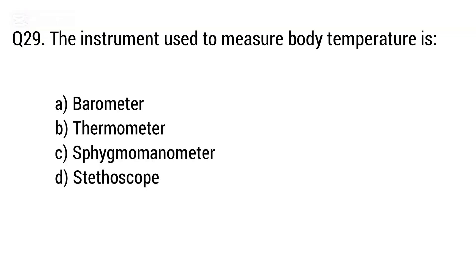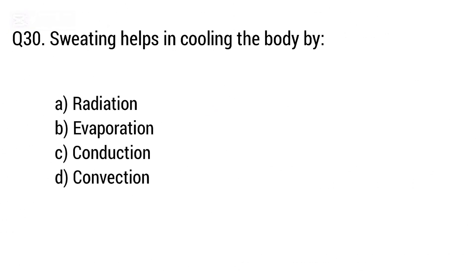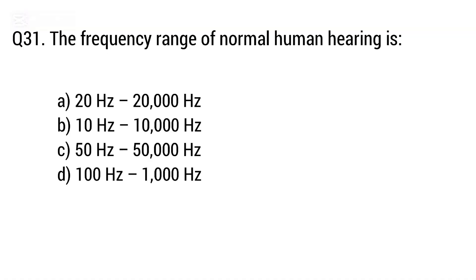Question 29: The instrument used to measure body temperature is? The right answer is option B — Thermometer. Question 30: Sweating helps in cooling the body by? The right answer is option B — Evaporation. Question 31: The frequency range of normal human hearing is? The right answer is option A — 20 to 20,000 Hz.